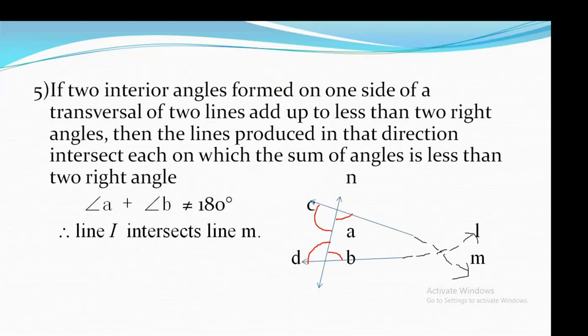See, first let's read what the fifth postulate says: if two interior angles formed on one side of a transversal of two lines add up to less than two right angles, then the lines produced in that direction will intersect each other on the side where the sum of angles is less than two right angles. Now let's see the figure.